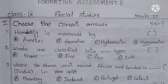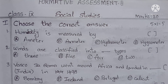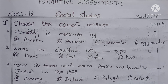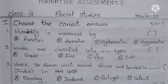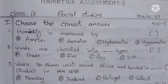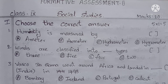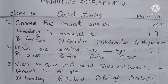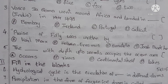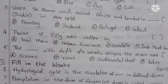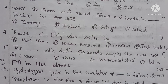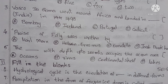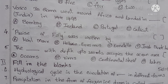In Section I there are objective type questions — choose any one of A, B, C, D and put in the bracket. First question: humidity is measured by. Second question: winds are classified into dash types. Third question: Vasco da Gama went around Africa and landed in. Fourth question: Praise of Folly was written by. Fifth question: the dash with depth up to 200 meters occupies the ocean area.